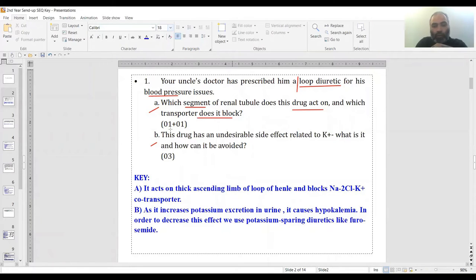The key is one and one, meaning you need to give the segment for one mark and mention the transporter for the second mark. The second question asks about the drug's undesirable side effect related to potassium - what is it and how can it be avoided?